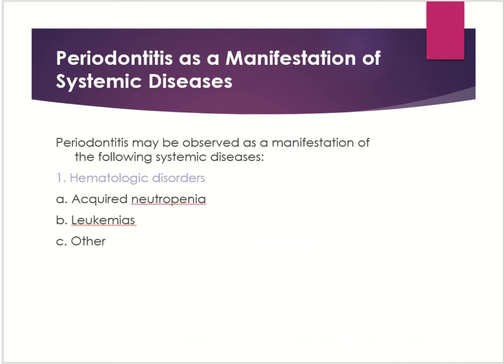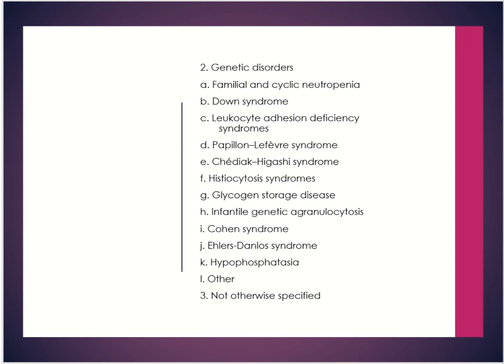Periodontitis as a manifestation of systemic diseases: in this case your systemic disease is the major predisposing factor, and local factors such as plaque and calculus are not evident. Factors that can cause this situation include hematological disorders such as neutropenia, leukemias, and iron deficiency anemias. Another condition is Papillon-Lefèvre syndrome, which also has hand and foot implications and is covered in oral pathology.